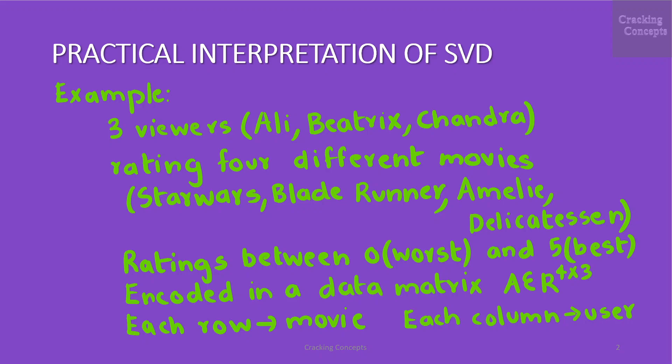Their ratings are values between 0 which is the worst and 5 which is the best and encoded in a data matrix A of dimension 4 by 3. Each row represents a movie and each column a user.